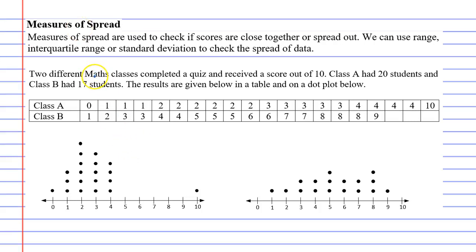Measures of spread. Measures of spread are used to check if scores are close together or spread out. The measurements we use are range, interquartile range, and standard deviation, and that's what we're going to learn about today.